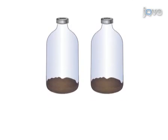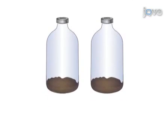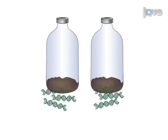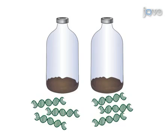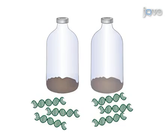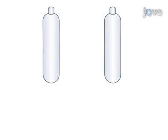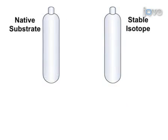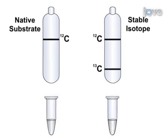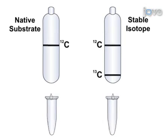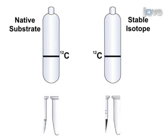The second step of the procedure is to extract total DNA from this isotope labeled sample. The third step is to subject this DNA to density gradient ultracentrifugation in cesium chloride. The final step is to fractionate the density gradient to obtain heavy and light DNA for subsequent molecular characterization.